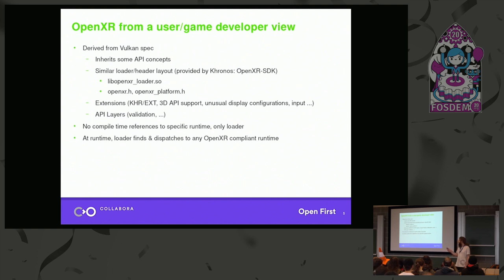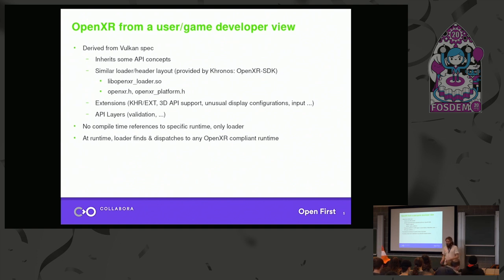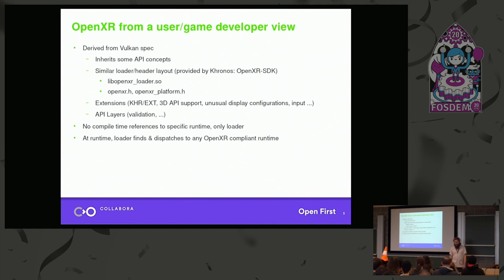The API is extensible. There is a core specification, but each vendor can make their own extensions. For example, if you have unusual display configurations — like if you want four displays in your headset — you would make an extension. Or if you have an unusual input device, or if you have one of those CAVE systems where you have monitors all around you instead of a headset, that would be in extensions.